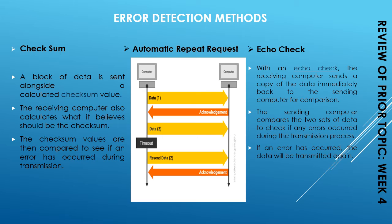After that we discussed the echo check. With an echo check, the receiving computer sends a copy of the data immediately back to the sending computer for comparison. The sending computer compares the two sets of values to check if any error occurred. If an error has occurred, the data will be transmitted again. However, there is a drawback: if the two sets of data are different, you will have no way of knowing whether the error occurred when the data was originally sent or when it was sent back.